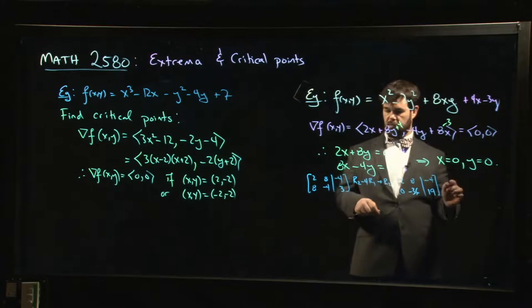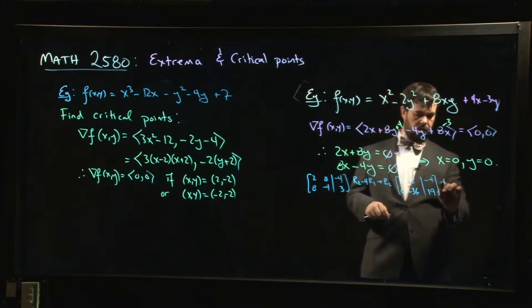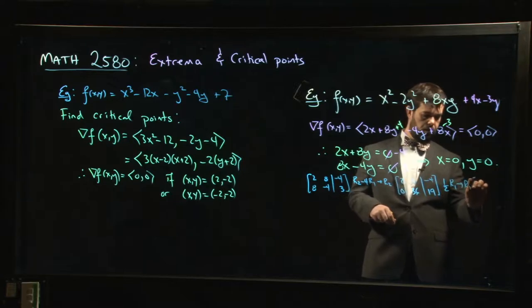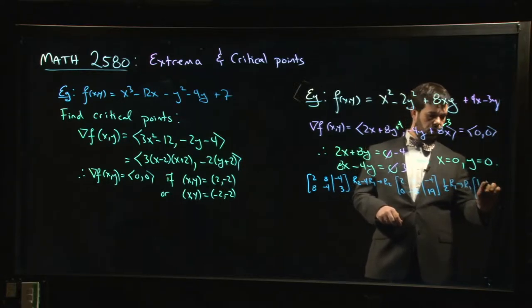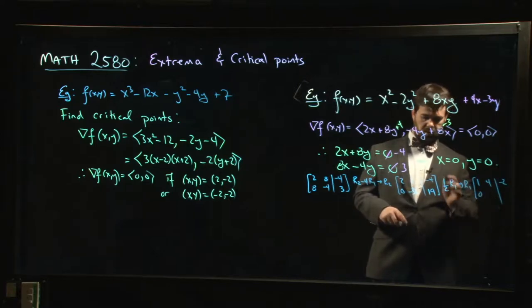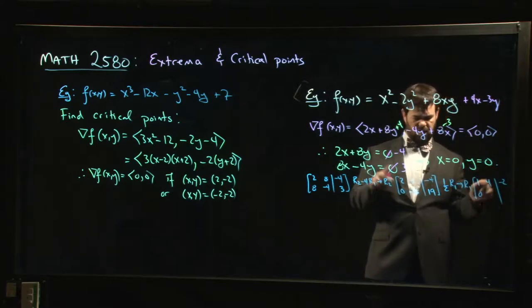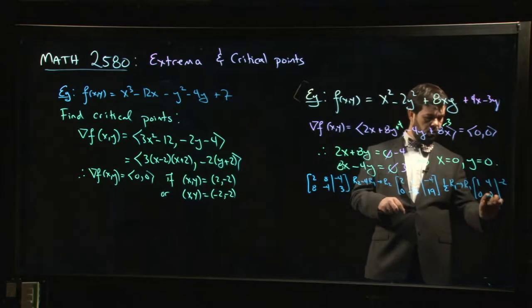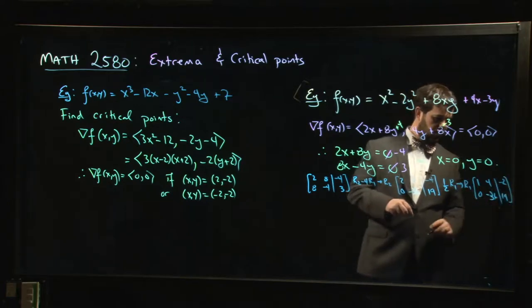And, you know, maybe we'll do one more thing. We might say let's do half of row 1, make that the new row 1. Why not? 1, 4, -2. And, hey, I guess we could do... you know what? No, let's leave it. We'll solve in a second.